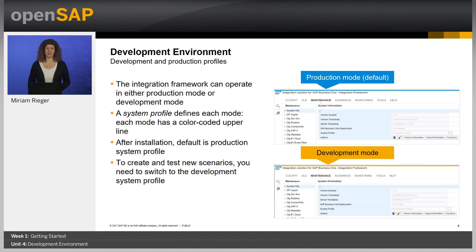Each mode has a color-coded upper line: blue when working in productive mode and golden when working in development mode. After installation, the integration framework opens in productive mode. If you want to create and test new scenarios, you need to switch the system profile to development. The development mode contains recommended configuration settings for scenario development, testing, and debugging. It is very easy to switch between modes, but after making the switch, you need to restart the integration service for the change to take effect.